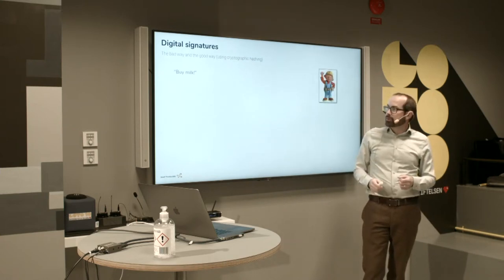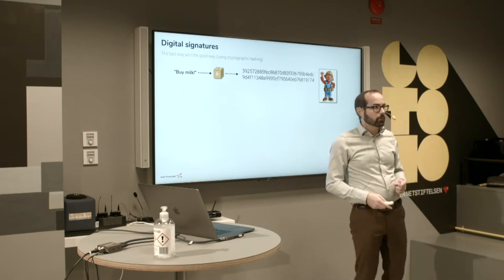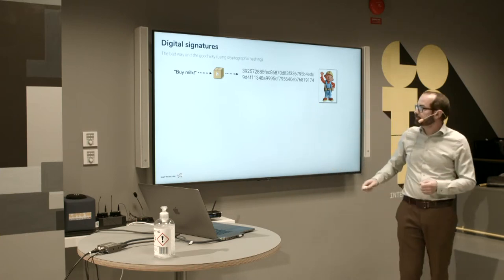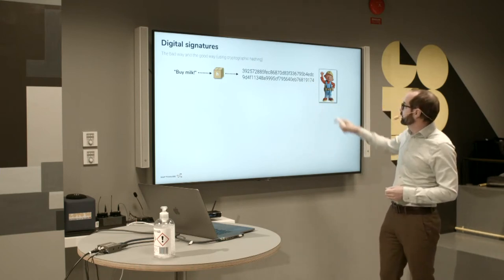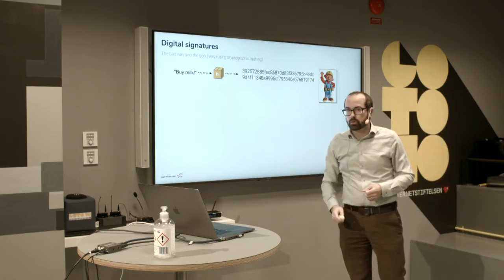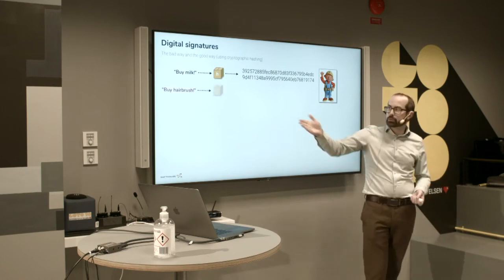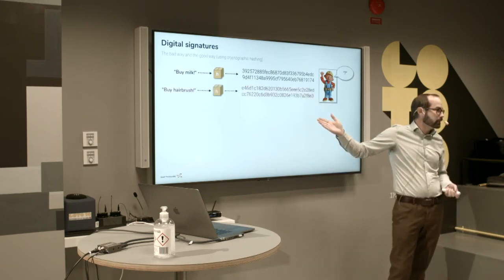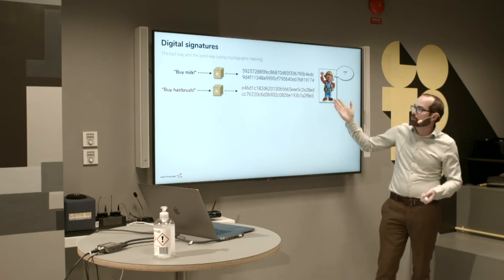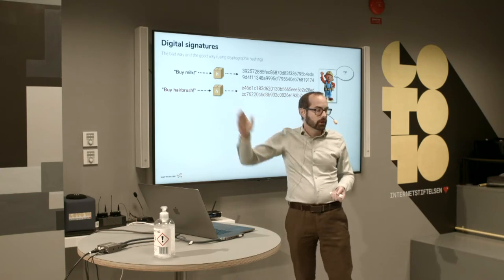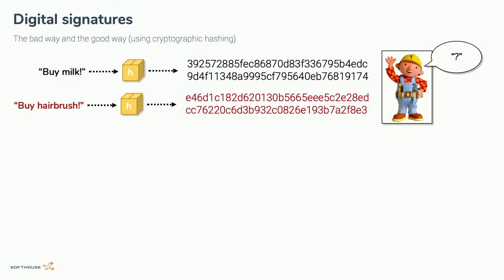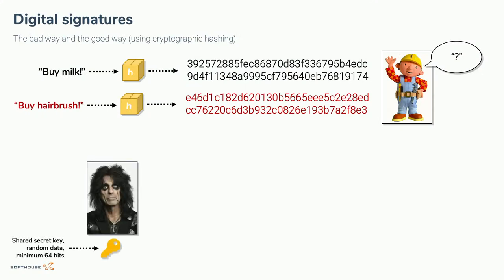Going back to the example: we hash the 'buy milk' message and Bob receives the message and hash. But if I were in the middle, I could produce my own message and a hash of that message. There's no way for Bob to know that 'buy milk' was the original message. So hashes on their own can't be used as digital signatures — we need to do something else.